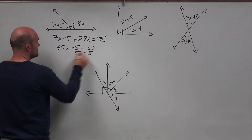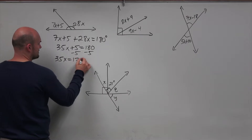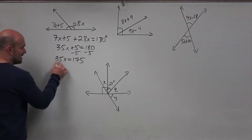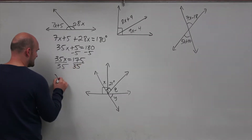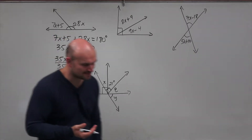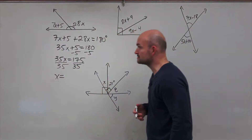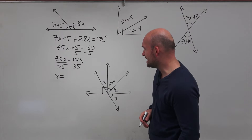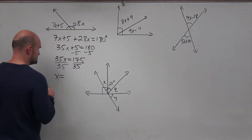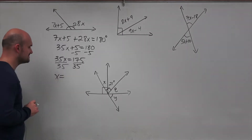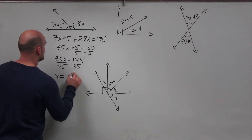Now I'll subtract 5 from both sides, and I get 35x = 175. Then to solve for x, I'll divide by 35 on both sides. 5 times 35 is 175, so x = 5.